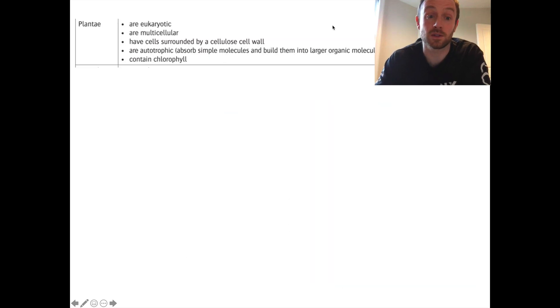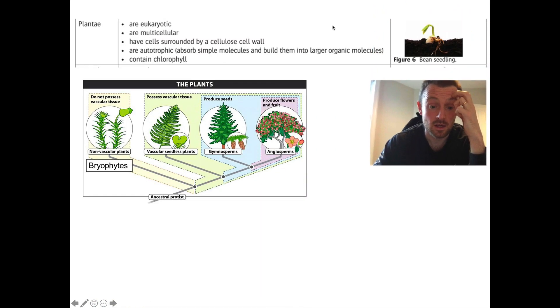What else? Well, we've got plants as well. So plants are also eukaryotic, they're multicellular, their cells are surrounded by a cellulose cell wall. Now we talked about the word heterotrophic for animals. Now plants aren't that, they are autotrophic. So auto means like yourself, so they make their own food, they autotrophically produce their own food molecules. So they absorb simple molecules like carbon dioxide and water, they combine them in photosynthesis to make larger organic molecules, which is the food source. They all contain chlorophyll.